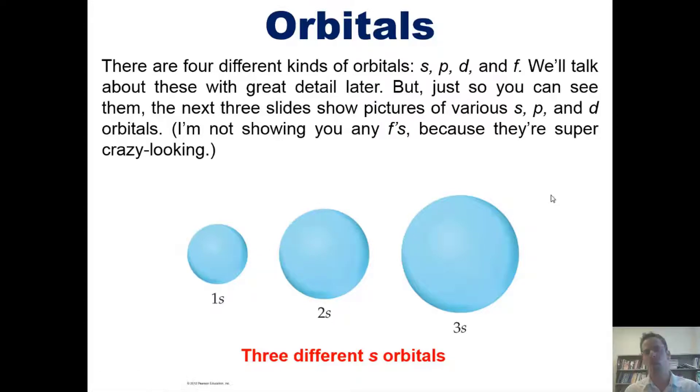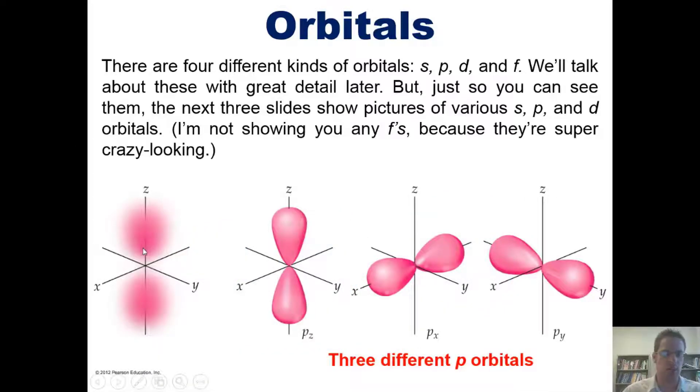If you were to solve the Schrödinger equation for a p orbital, it would look like this. If the nucleus occupies this point in which three axes—an x, a y, and a z—straddle each other, then the p orbitals occupy a region of space both above and below the axis. P orbitals in effect look like little dumbbells.